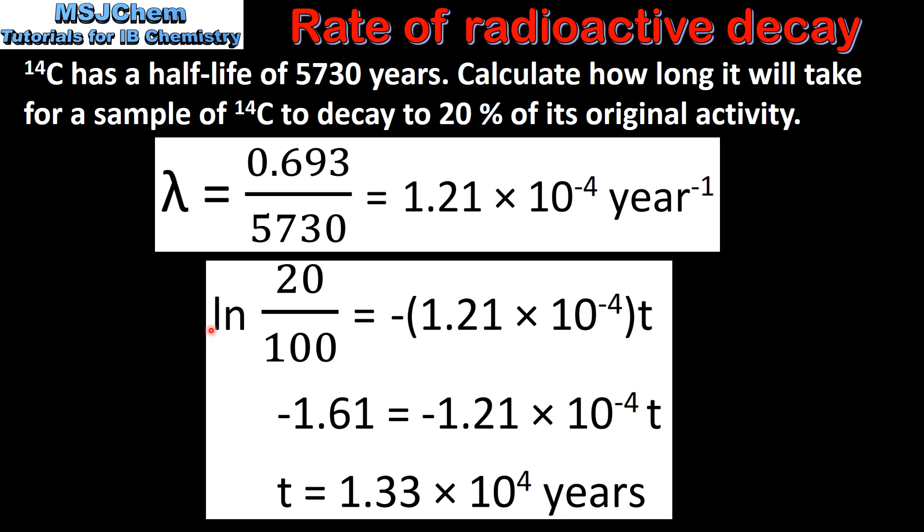So we have the natural log of 20 over 100, where 20 is 20% of the original activity which is 100%, and this is equal to negative the decay constant multiplied by the time. When we solve for t this gives a time of 1.33 times 10 to the 4 years.